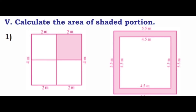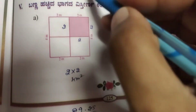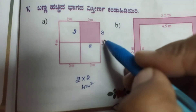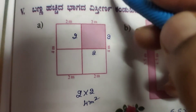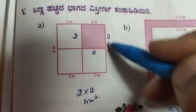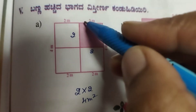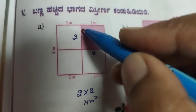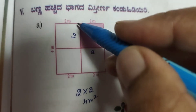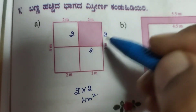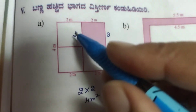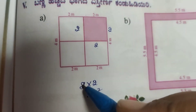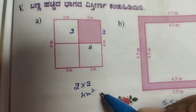Last section: calculate the area of the shaded portion. The total length of the shaded figure is 4 meters, so half of this shaded portion is 2 meters. The square side is 2 meters. Area of shaded portion is 2 into 2, that is 4 meter square.